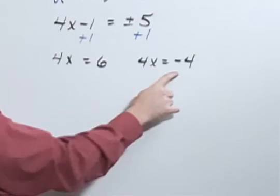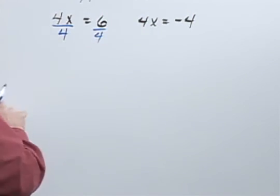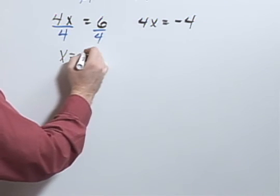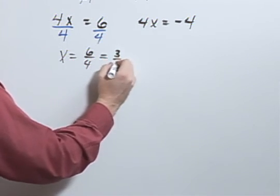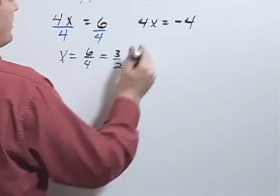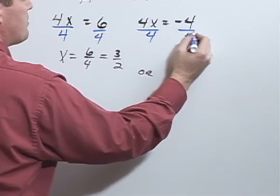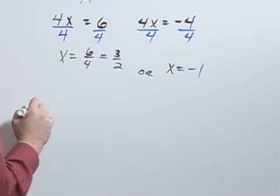Let's continue with these separated. Divide this first one by 4 on both sides, x would equal 6 fourths, which would reduce to 3 halves. Or if I divided both sides of the right equation by 4, x would equal negative 1.